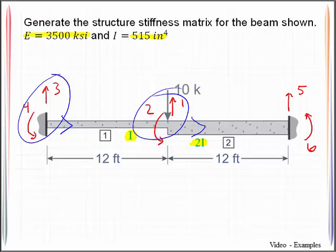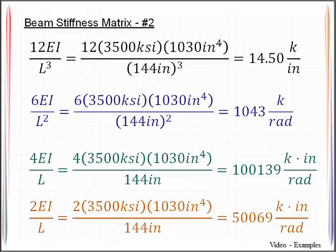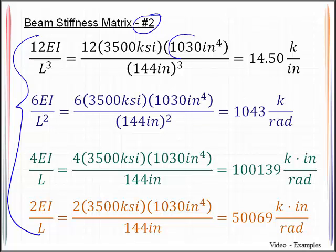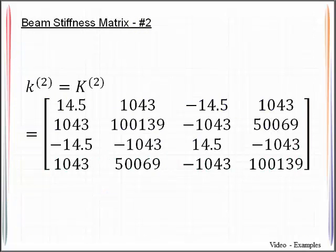For member 2, we'll consider that to be the origin there. In a like fashion, we can compute for member 2 the same quantities, just recognizing they'll use different values for the moments of inertia. Then we can plug that in. The degree of freedom labeling would be 1, 2, 5, and 6.